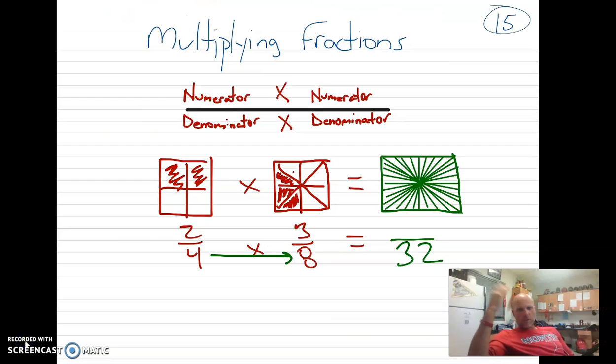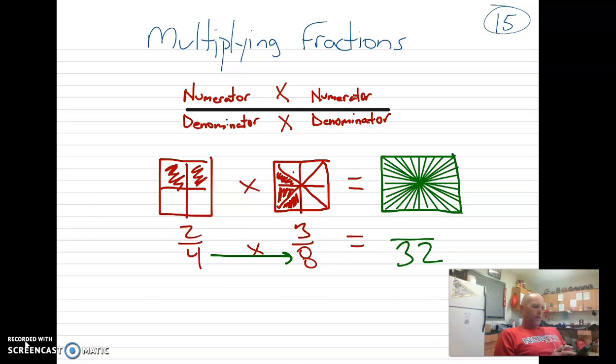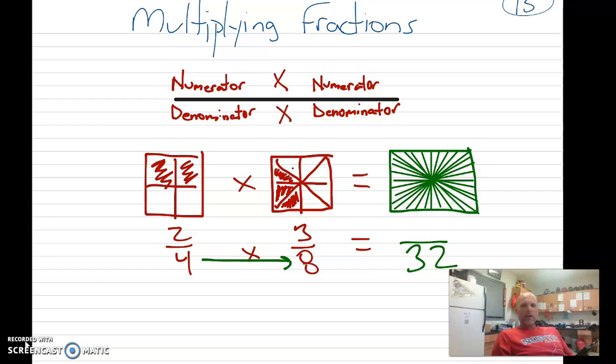Alright, so when multiplying fractions, here's what happens. Think about denominators. It's how many parts it takes to make a whole. So we're taking the 4 in 2 fourths and the 8 in 3 eighths and multiplying that to create even more parts that it takes to make a whole. So that's what's happening.